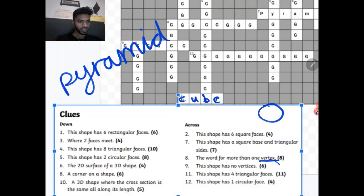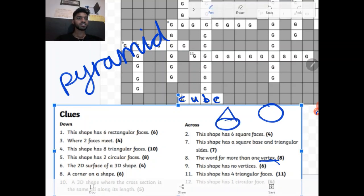Finally this shape has one circular face. That would be a cone. And there is your one circular face at the bottom.